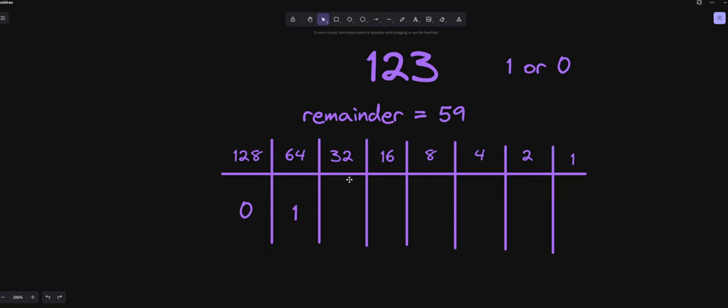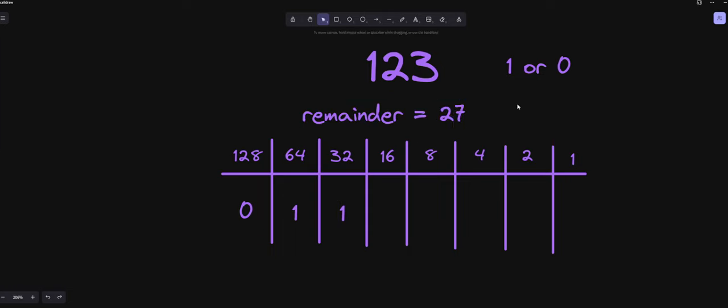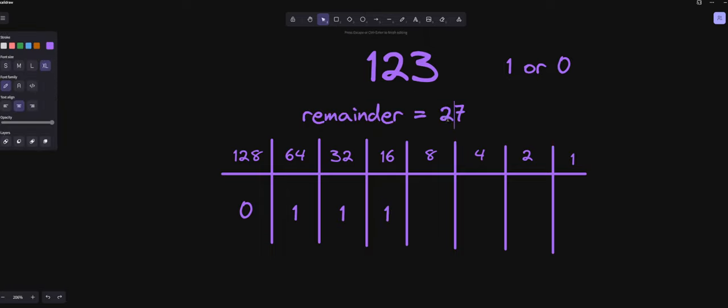So now that we have 59, we go to our next cell. We say, okay, is 59 smaller than 32? Yes, it is. So we're going to go ahead and put a 1 in there. And then we're going to go ahead and subtract 32 from it, which is going to be 27. And then from there, we just keep following that same pattern. 27, we're going to subtract 16 from it because we know 16 is smaller. So we're going to add a 1 and then we're going to subtract 16 from it, which is going to give us 11.